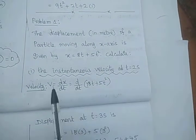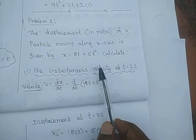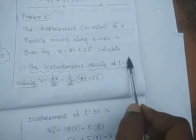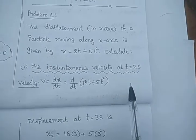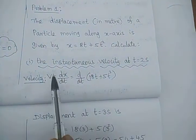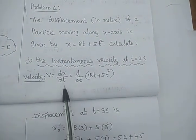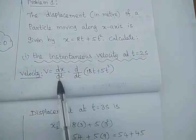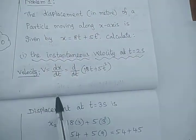We have to calculate the instantaneous velocity. Instantaneous means the velocity of the particle at a particular second. That particular second is given as t equals 2 seconds. Velocity means displacement by time, so we have to differentiate the displacement with respect to time.